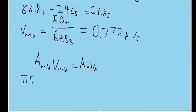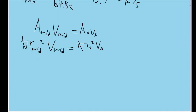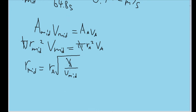Substituting, we get pi times r_mid squared times V_mid equals pi times r_A squared times V_A. The pi cancels from both sides. Dividing both sides by V_mid and then taking the square root of both sides, our formula for the radius in the middle section is r_mid equals r_A times the square root of V_A divided by V_mid. Now all that's left is to plug in our values and solve.